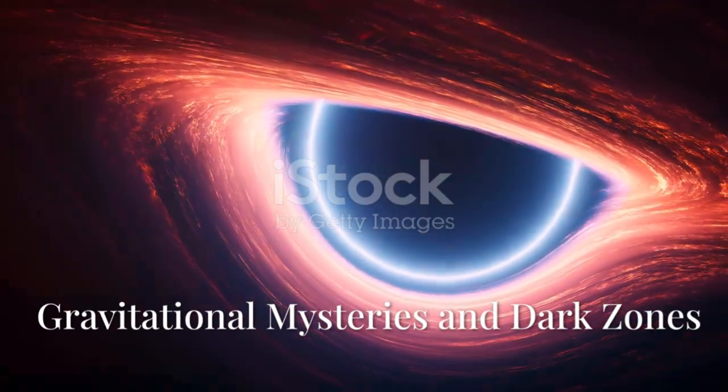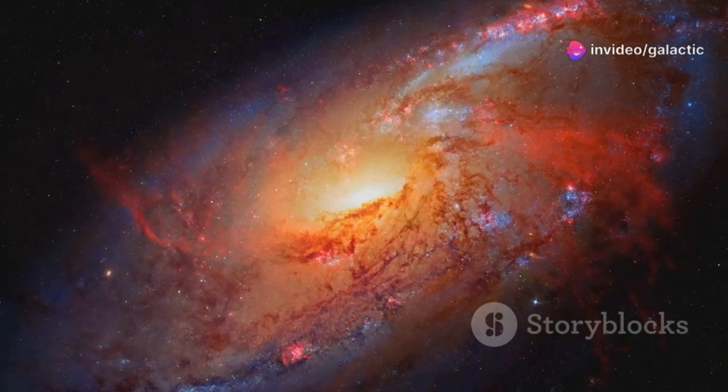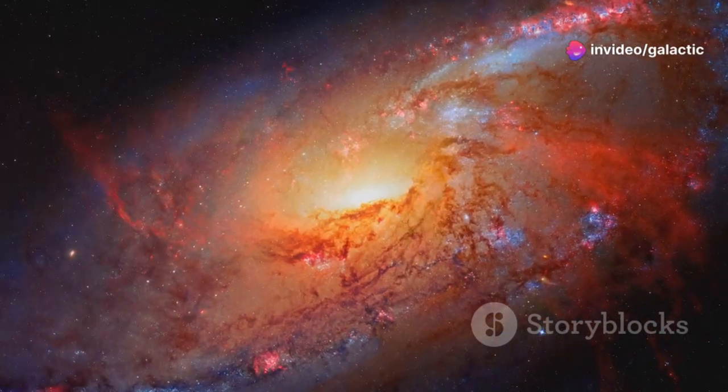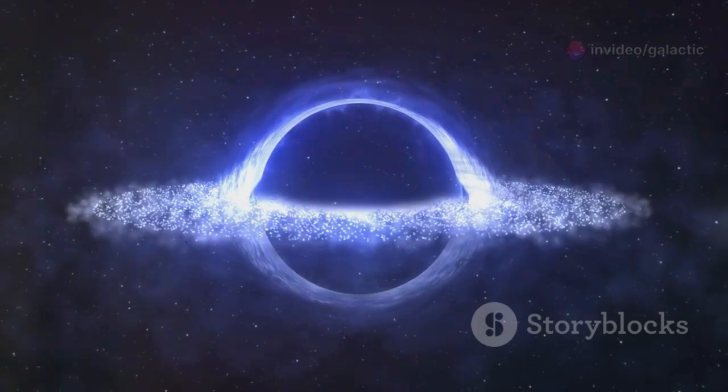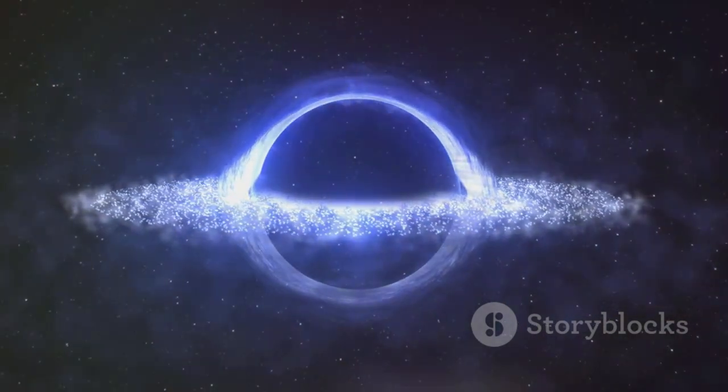Gravitational lensing lets us see farther, using massive objects to bend light. JWST finds lensing effects stronger than visible matter or even dark matter can explain. Sometimes, there's no visible source at all. Gravity without mass, as if spacetime is warped by nothing.